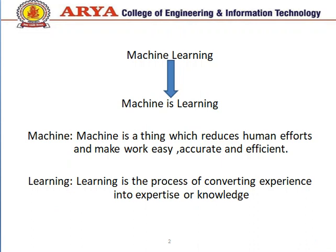The term machine learning is a combination of two words: machine and learning. A machine is a thing which reduces human efforts and makes work easy, accurate, and efficient. Learning is the process of converting experiences into expertise or knowledge — whatever we learn is based on our past experiences and new things.